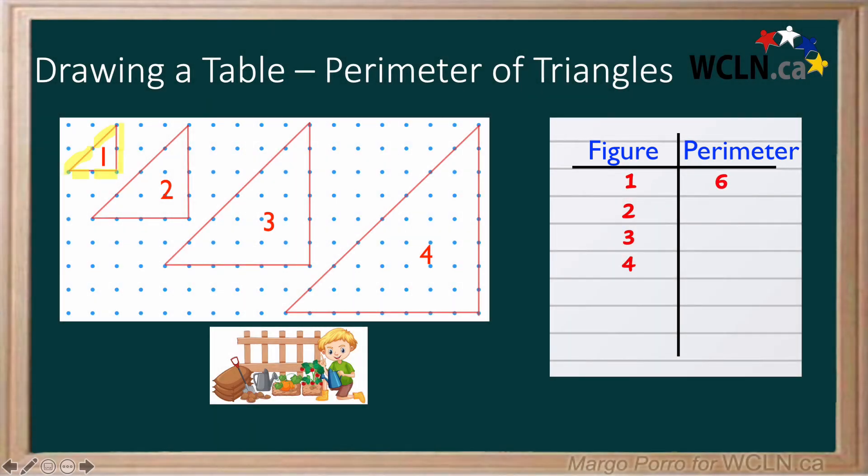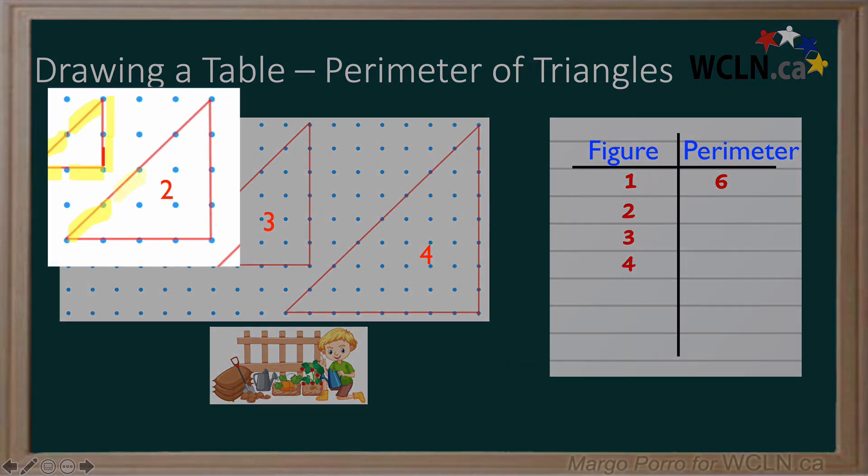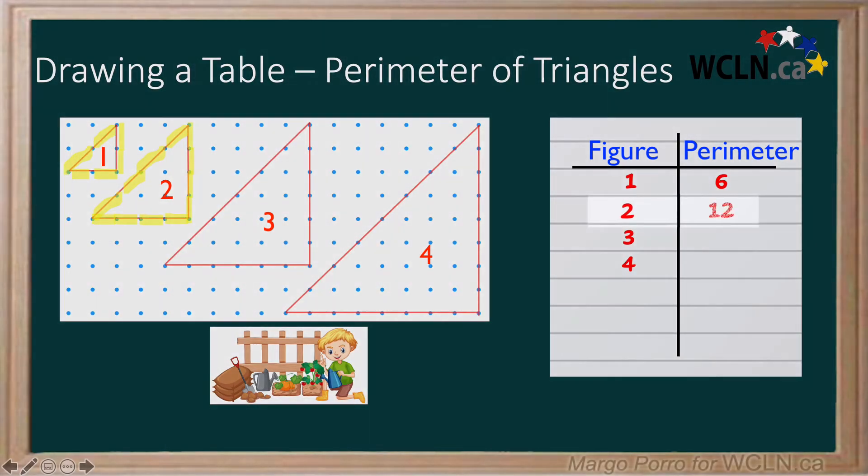Count the perimeter of the next triangle. One, two, three, four, five, six, seven, eight, nine, ten, eleven, twelve. We can put this on the chart.